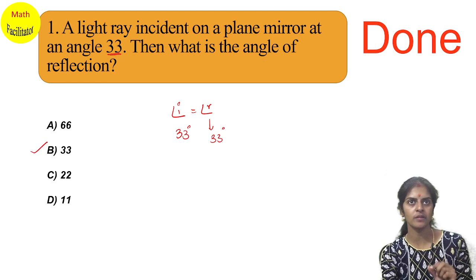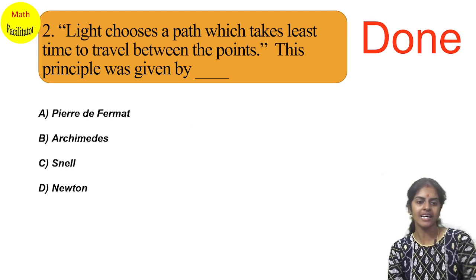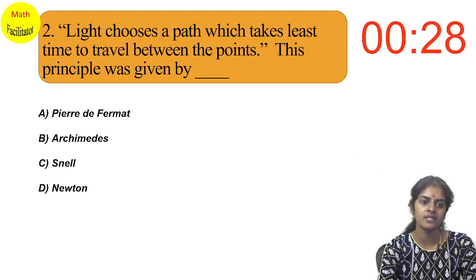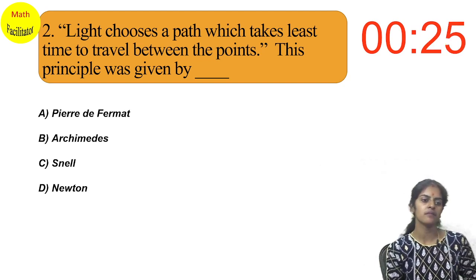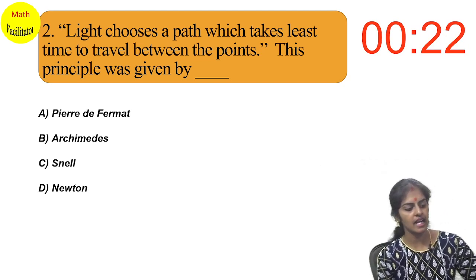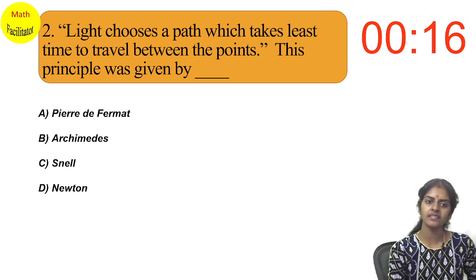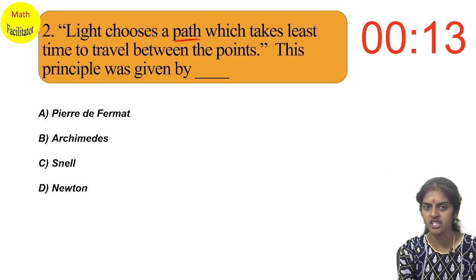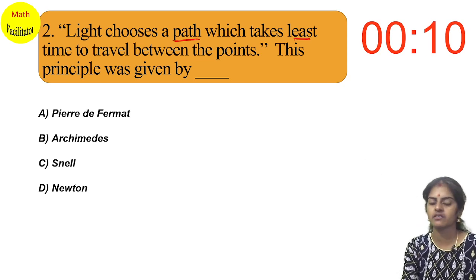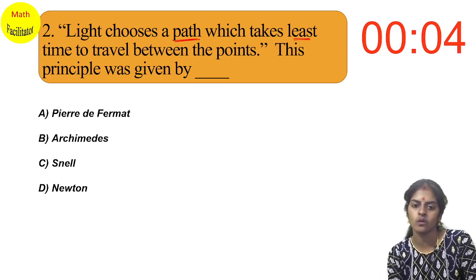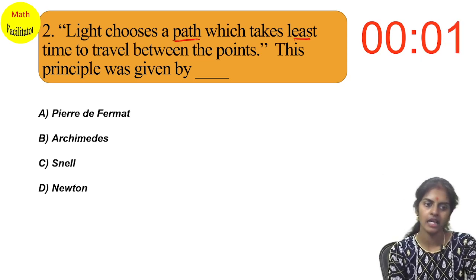Please check your score at the end of the session and mention it in the comments — no cheating at all. Question number two: light chooses a path which takes the least time to travel between two points. This principle was given by whom — Fermat, Snell, or Newton? This principle is given by Fermat — option number one, Fermat's principle.